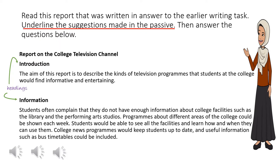Read this report written in answer to the earlier writing task. Underline the suggestions made in the passive, then answer the questions below. Report on the College Television Channel. Introduction: The aim of this report is to describe the kinds of television programs that students at the college would find informative and entertaining. Information: Students often complain that they do not have enough information about college facilities such as the library and the performing arts studios. Programs about different areas of the college could be shown each week. Students would be able to see all the facilities and learn how and when they can use them.